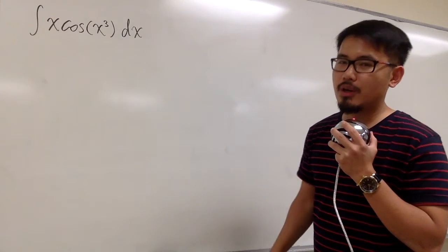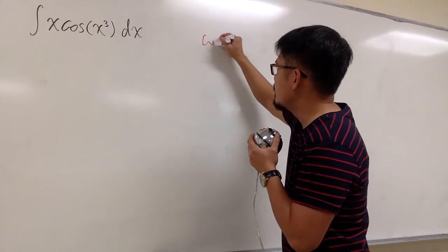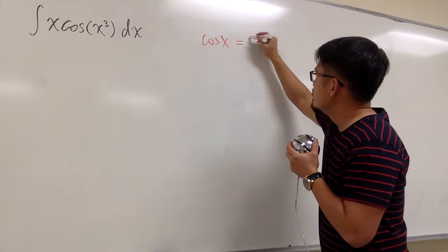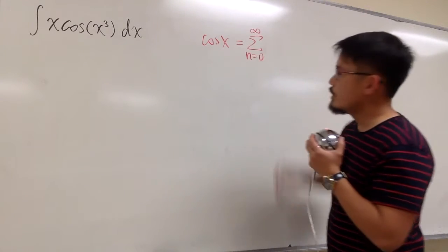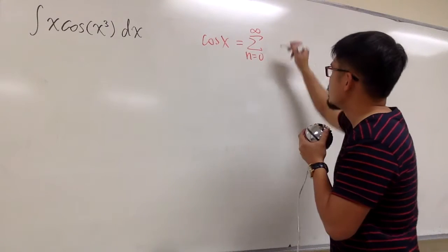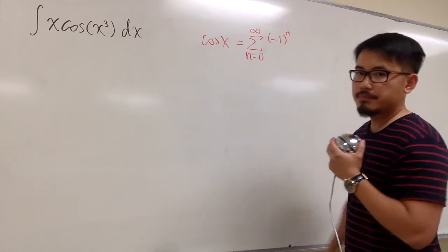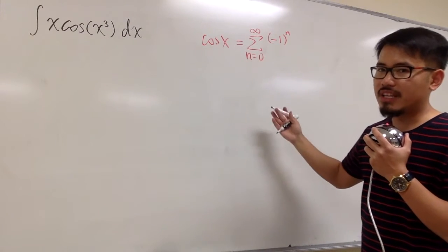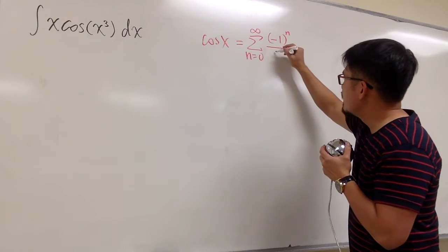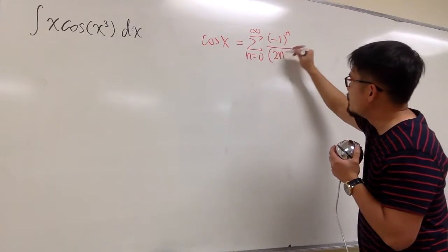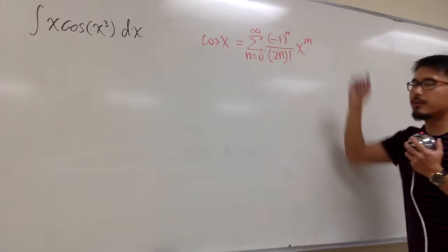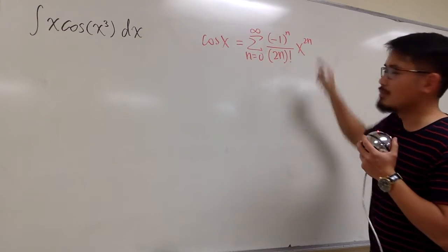Before we do so, we have to first remember what is the infinite series for cosine. Remember, cosine x equals the sigma from n goes from 0 to infinity. This is how I remember the series for sine and cosine — both are alternating, so we have the negative 1 to the nth factor. Cosine x is an even function, so we divide by the even factorial (2n)! and have x to the 2n power. For sine x, you will have 2n plus 1 in both the power and the factorial; the rest stays the same.